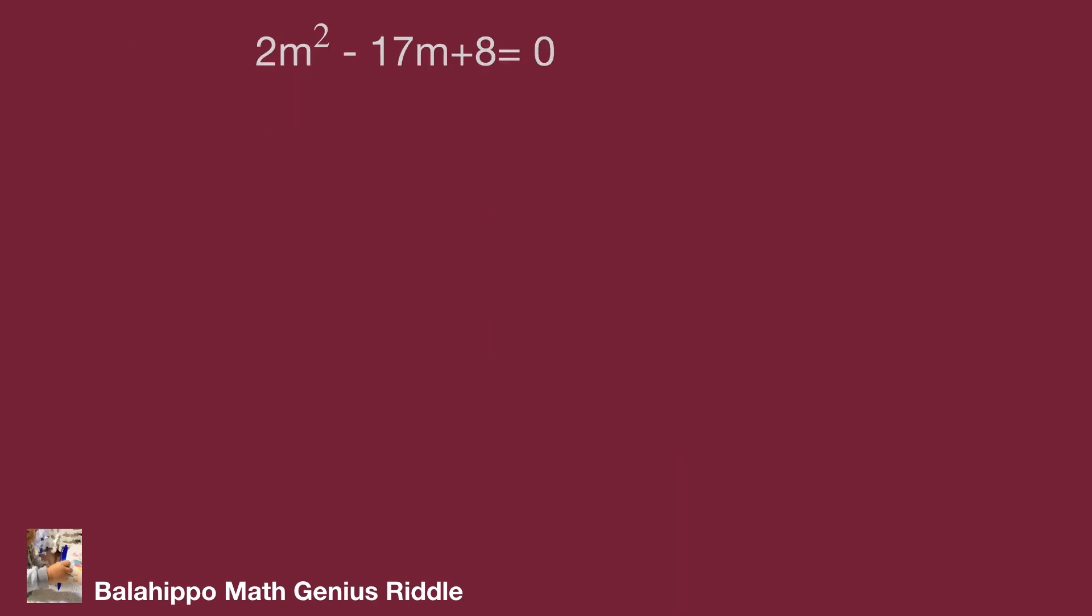To factorize this equation, we have (2m - 1) multiply (m - 8) equal to 0. So m equal to 1/2 and m equal to 8.